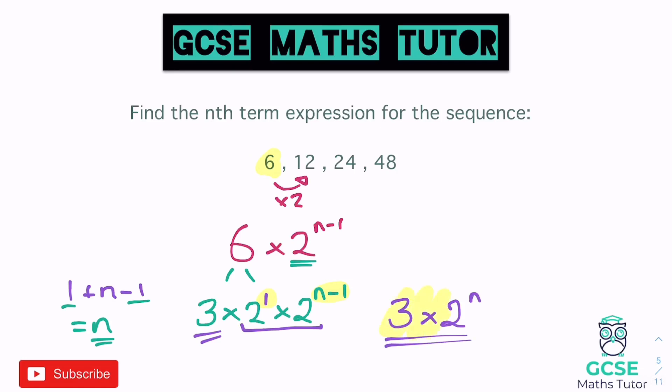You can actually write these nth terms in a slightly different format depending on what the question asks. If we want to write it in its simplest form — with the starting number as small as possible — we can write it as 3 times 2 to the power of n. We can verify: for n=1, it's 3 times 2 equals 6; for n=2, it's 3 times 4 equals 12. It works.